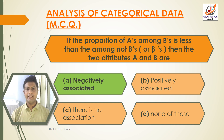If the proportion of A's among B's is less than among the not-B's (or beta's), then the two attributes A and B are negatively associated.